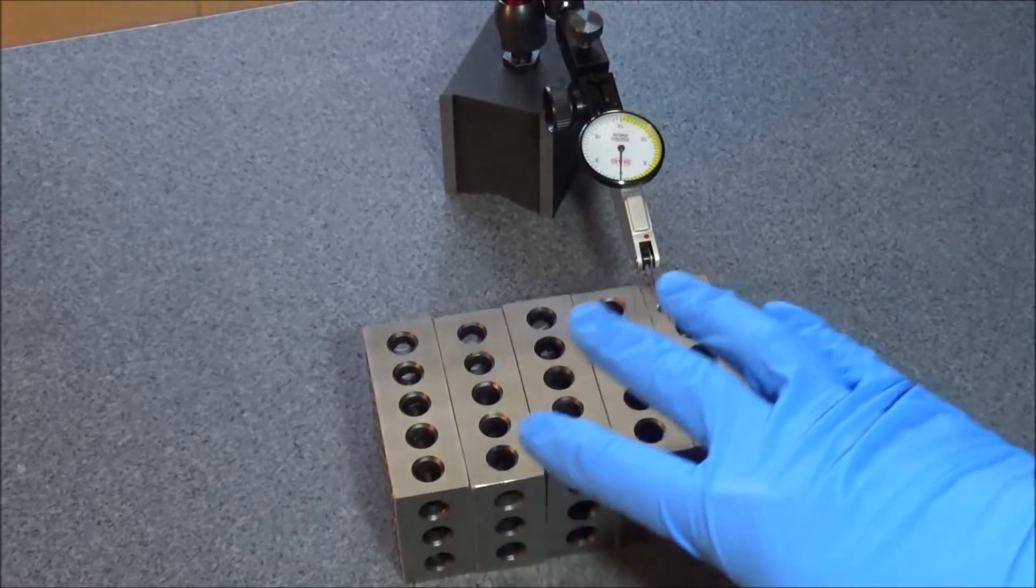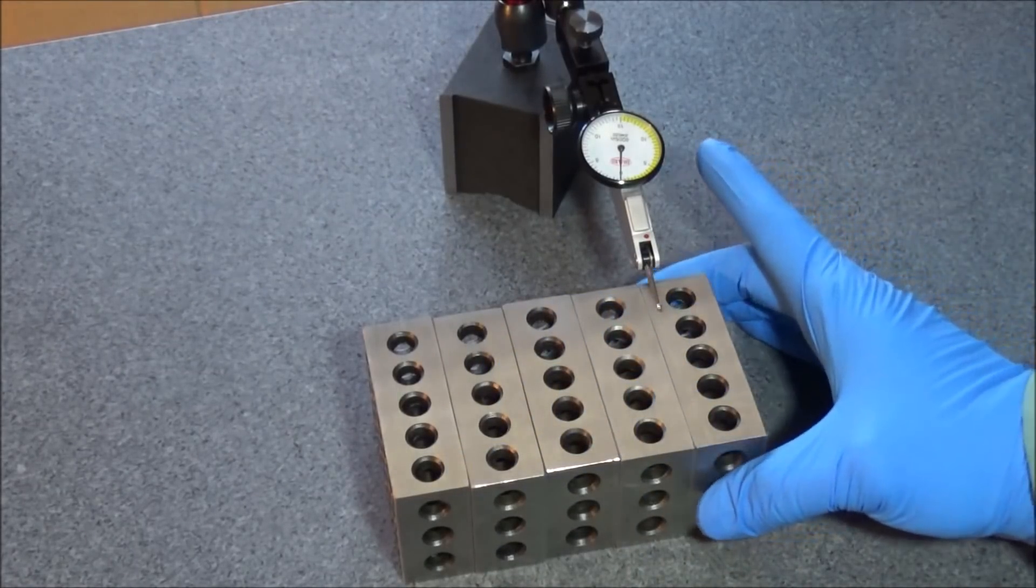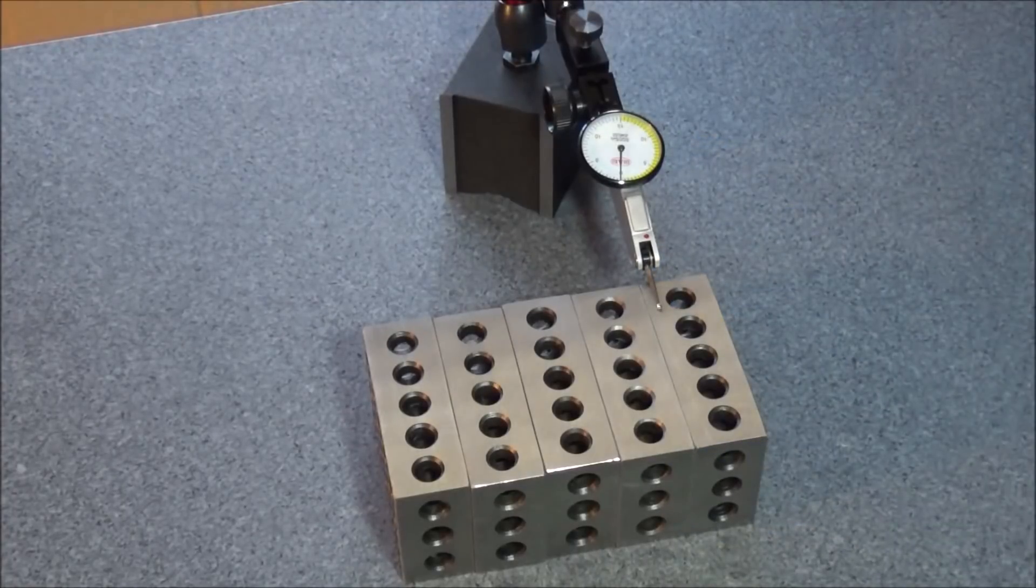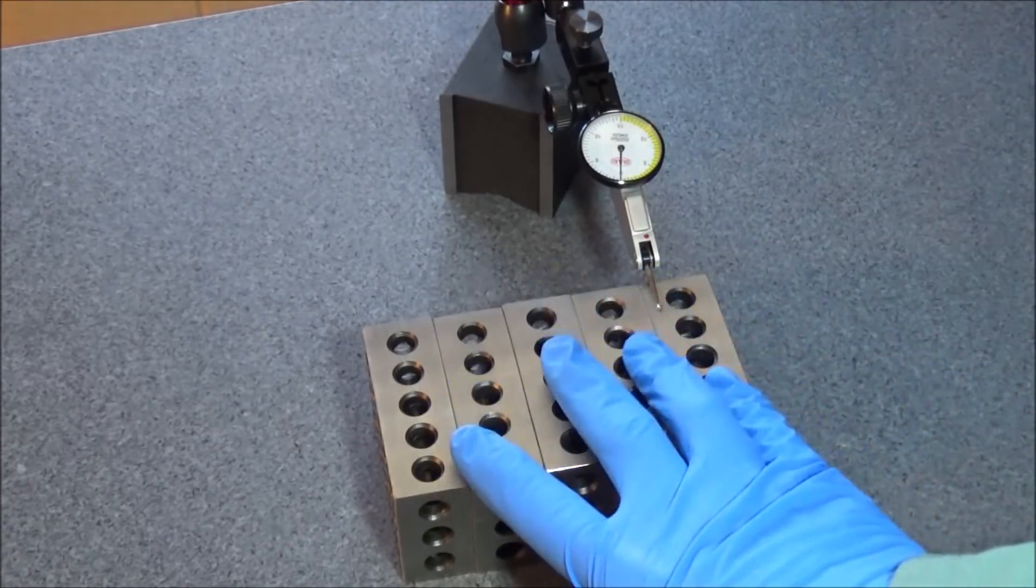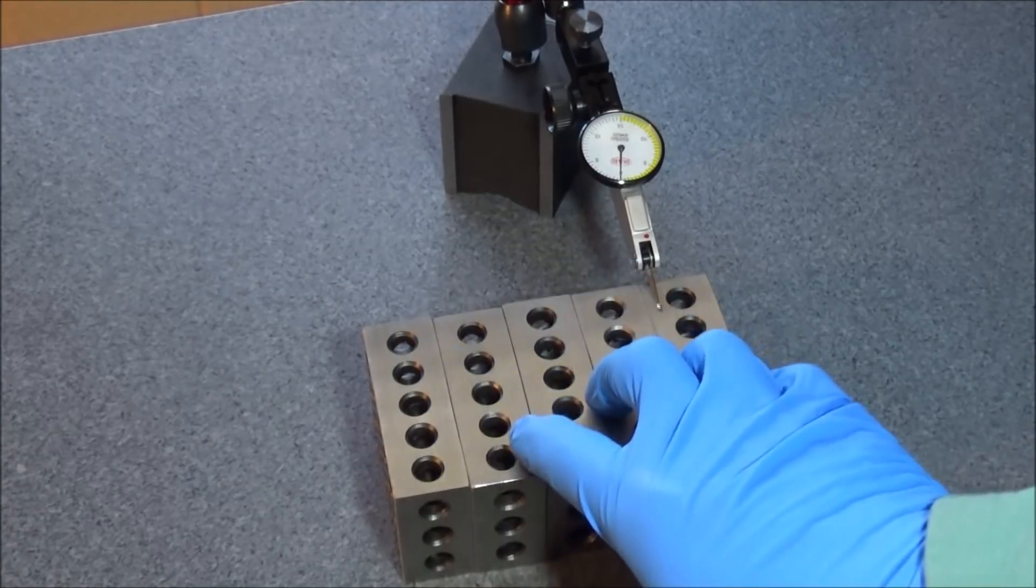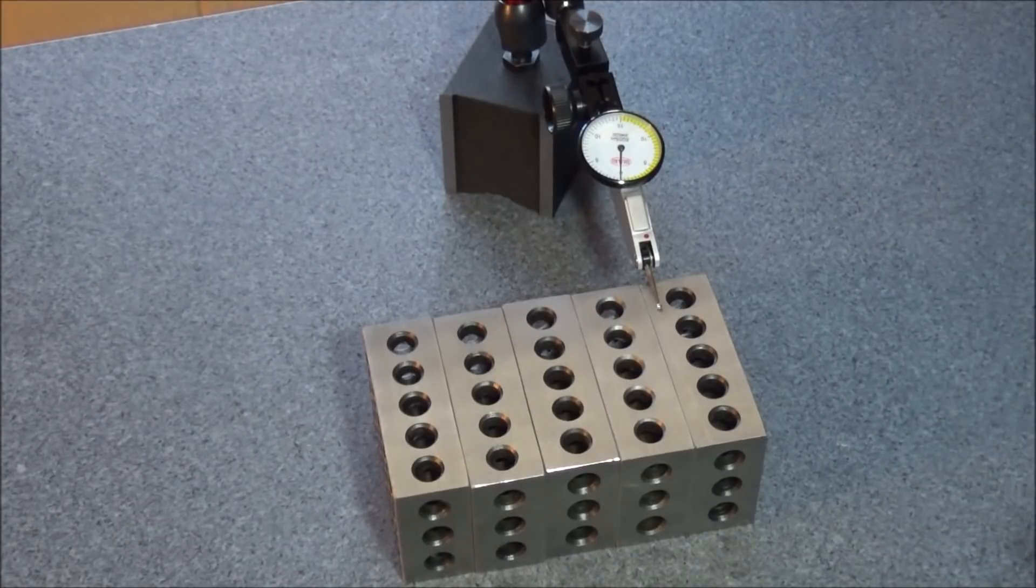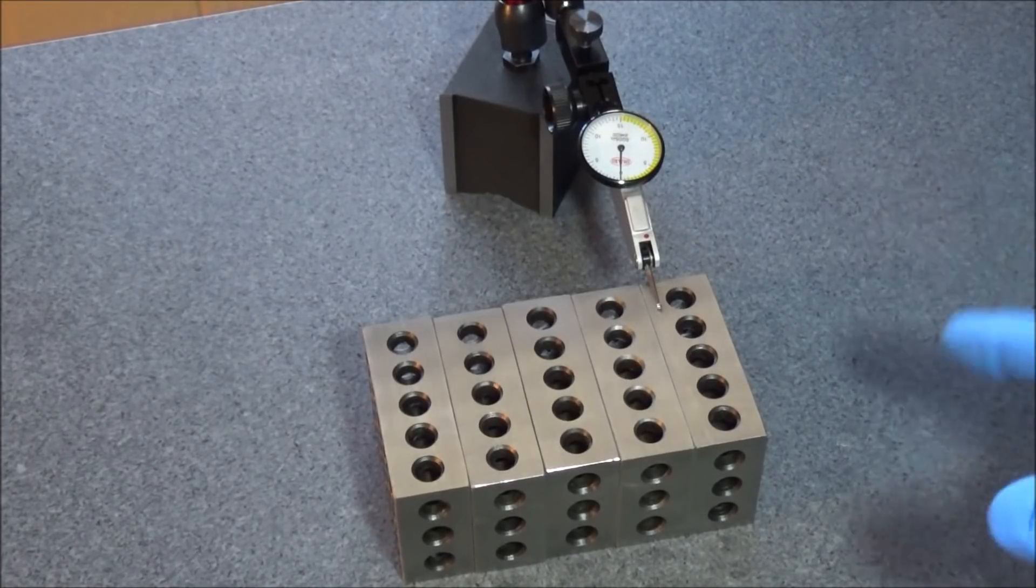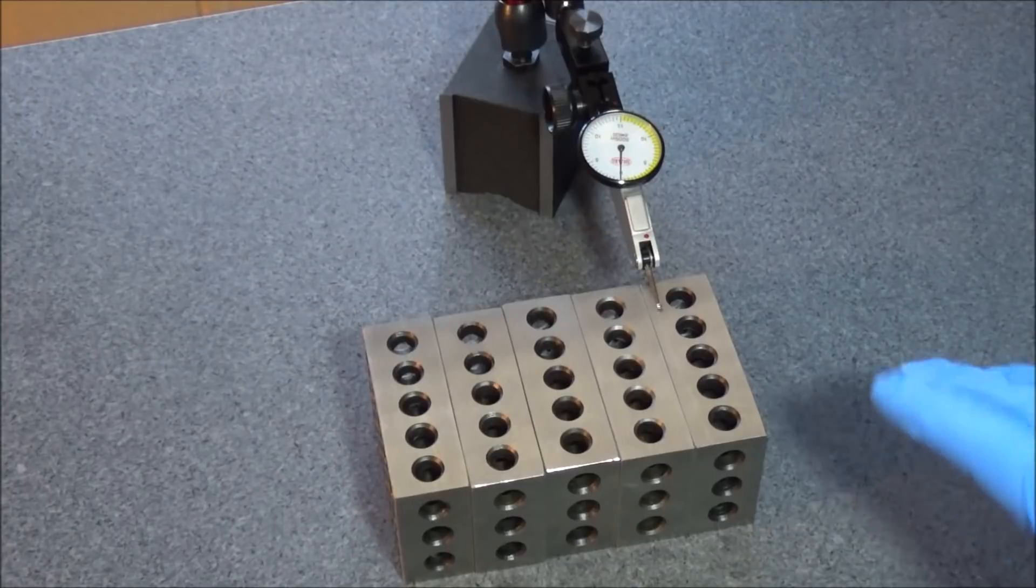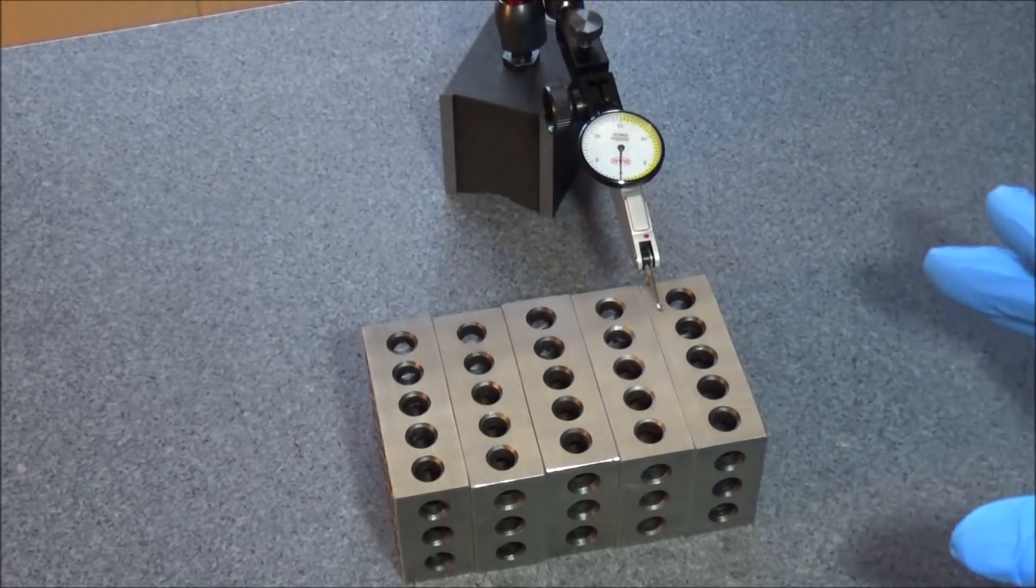Now all of my 1-2-3 blocks are economy grade. I picked them up at Shars. They are not all dimensionally exact, so bear that in mind if you're just picking up four 1-2-3 blocks to do some checks with. Chances of them being all exactly the same dimension are probably not that good.